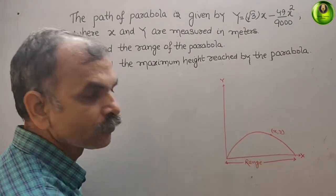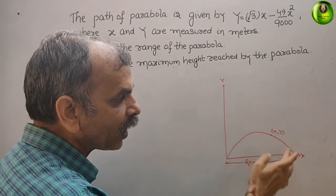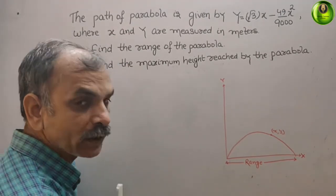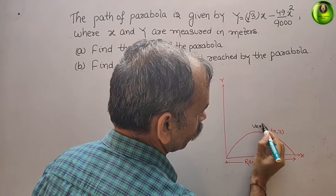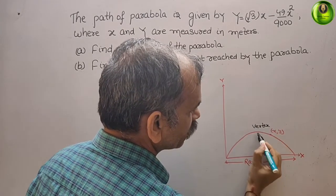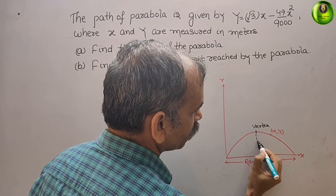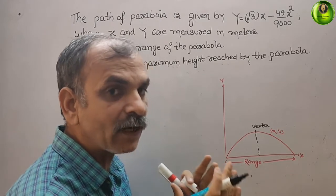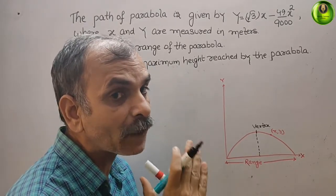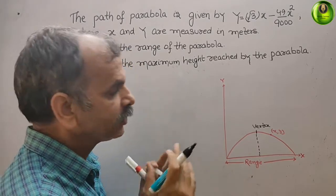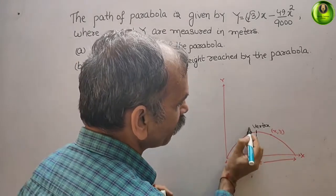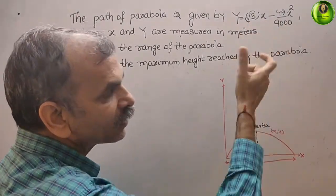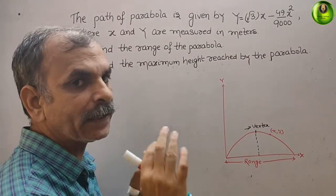That means we have to find the maximum height, which means we need to find the vertex. We will find the vertex here. Suppose this is your vertex — this point. The vertex contains the x-center coordinate and the y-maximum height. So what we will do is solve and find out our vertex coordinates. They have given the equation like that, but we will write it in standard form.